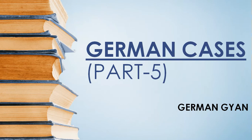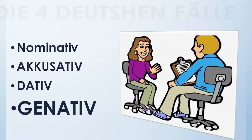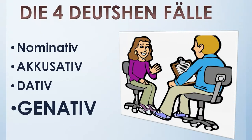If you want to watch Part 1, Part 2, Part 3, and Part 4, the link is in the description below — please go and watch, share, and don't forget to subscribe to German Gyan. The four German cases are: first is Nominative, second is Accusative, third is Dative, and fourth is Genitive.